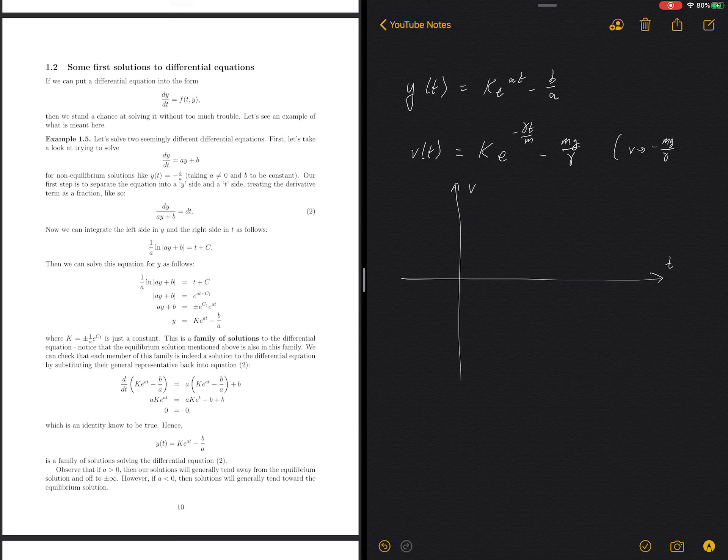Notice, we did this last time. For terminal velocity, we said v tends to minus mg over gamma as t goes to infinity. So we know we have a horizontal asymptote for this function. And I'll go ahead and just put that asymptote right here, which turns out to actually be a solution to the differential equation, right?